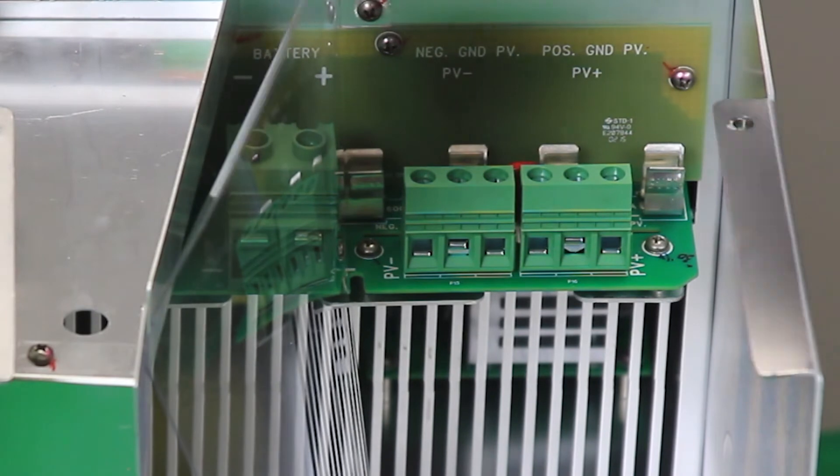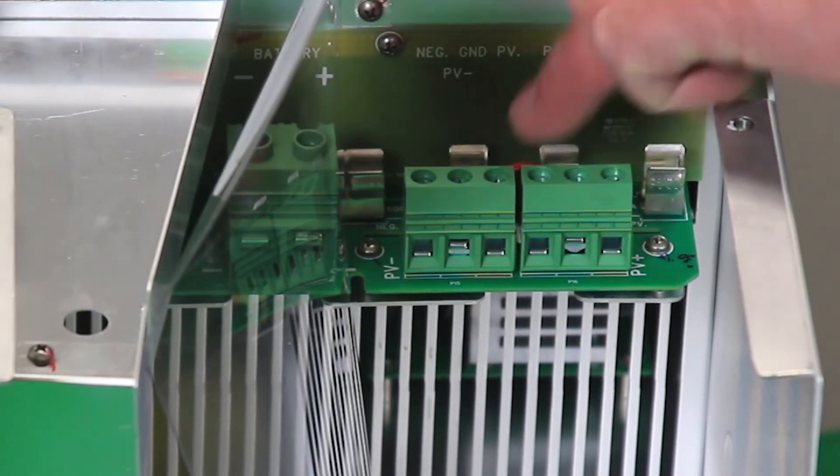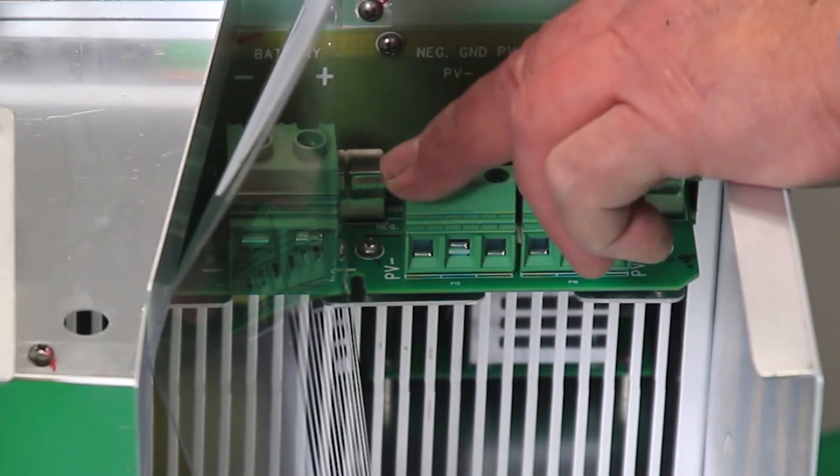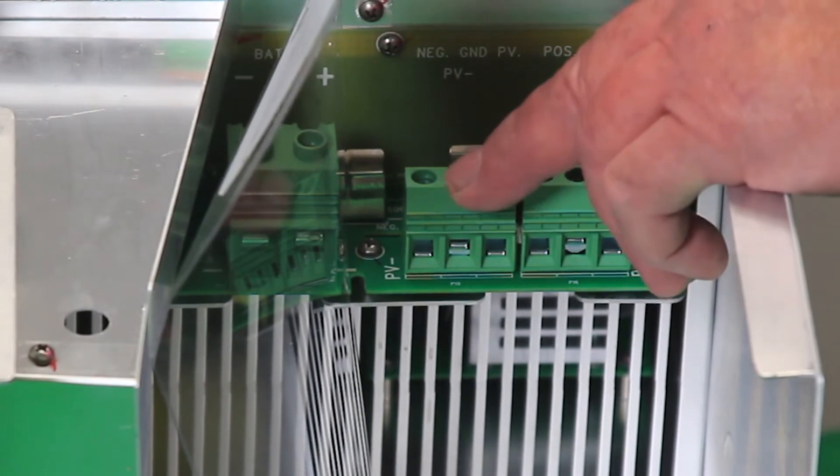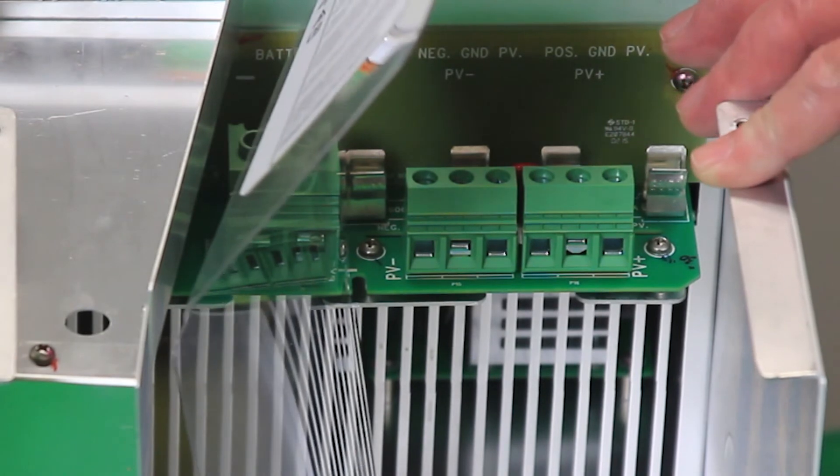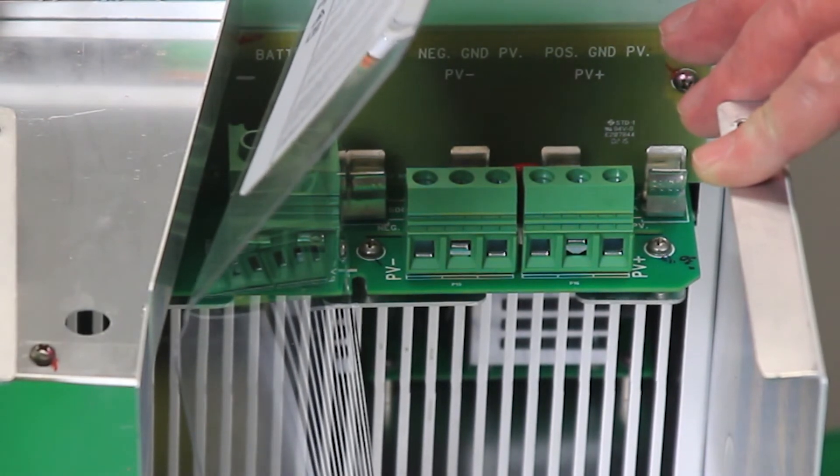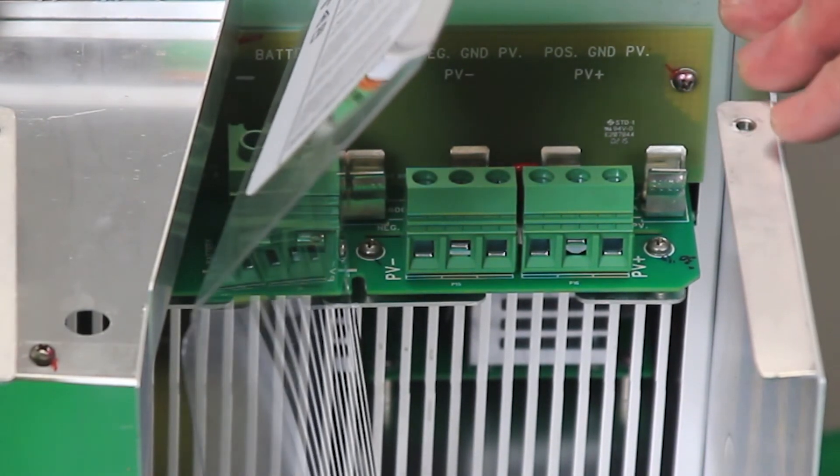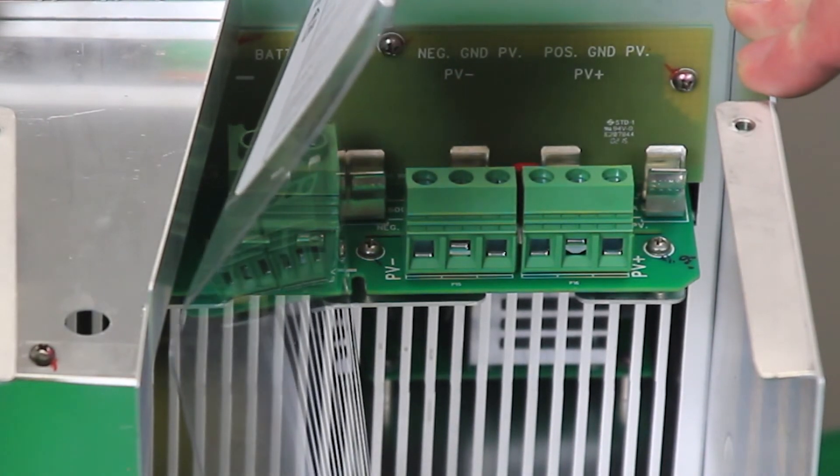And here we have the PV input. So we have three of the negative PV inputs and three of the positive PV inputs. These will accommodate number 6 AWG up to number 6 AWG to 13.5 square millimeter wire size.